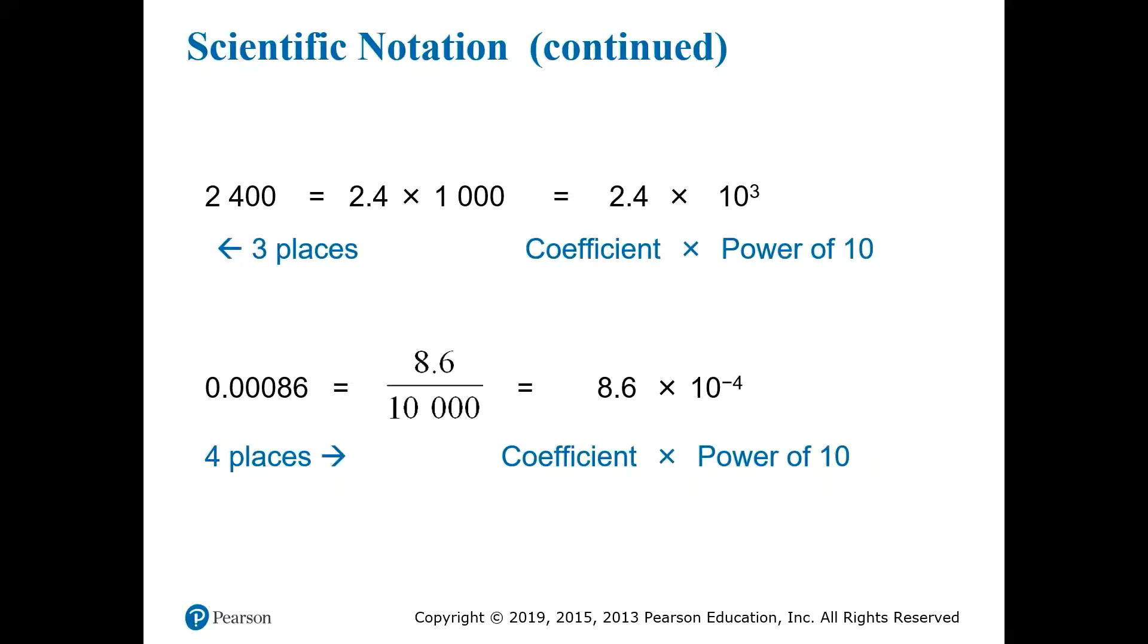Now that we remember how the powers of 10 work, we're in a better position to understand how scientific notation works. Take a number such as 2,400. To express this in scientific notation, you look at the highest place value with a non-zero digit, the one furthest to the left, and you use that place value for the power of 10. Since this 2 is in the thousands place, the power of 10 is 1,000, which we know is really 10 to the third power.